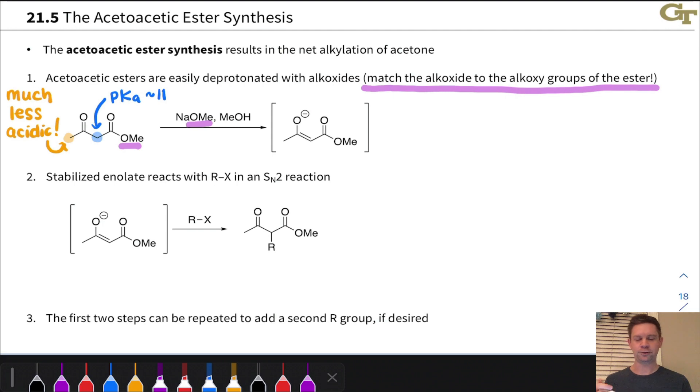Like we saw in the malonic ester synthesis, it's important to match the alkoxide to the alkoxy group of the ester. If we don't do that, transesterification is going to occur, and that's a nightmare. So if we're using a methoxy ester or a methyl ester, methyl acetoacetate, we need to use methoxide base. Ethyl acetoacetate, we need to use ethoxide base. The exact nature of this alkoxy group doesn't matter a ton because it's going to get hydrolyzed.